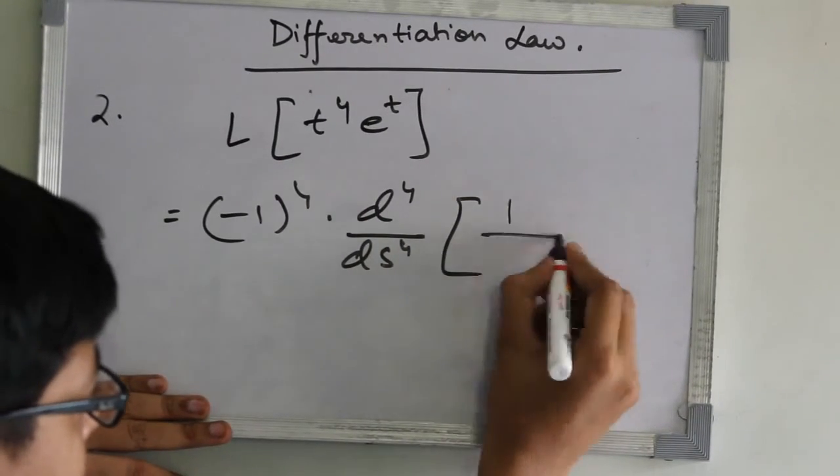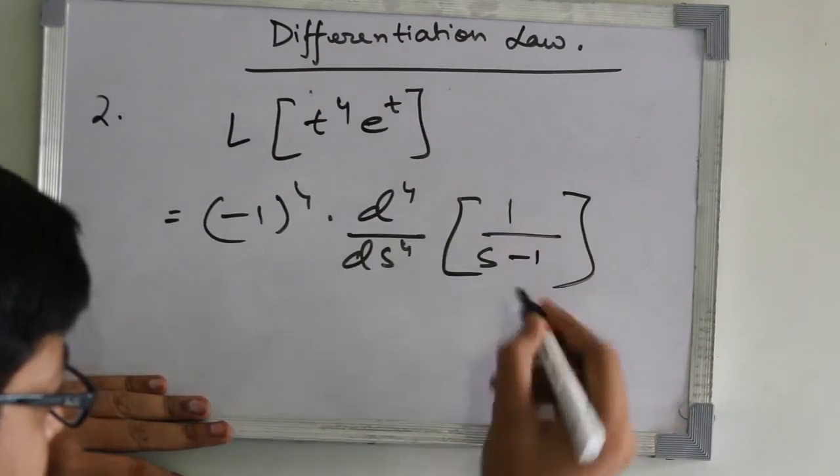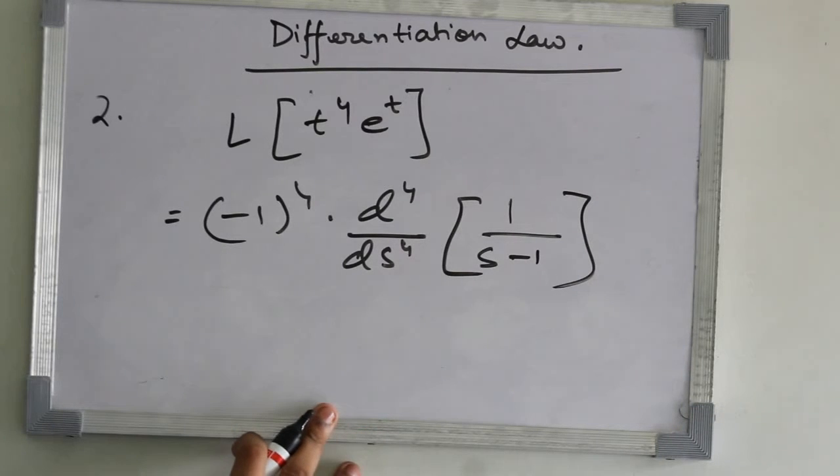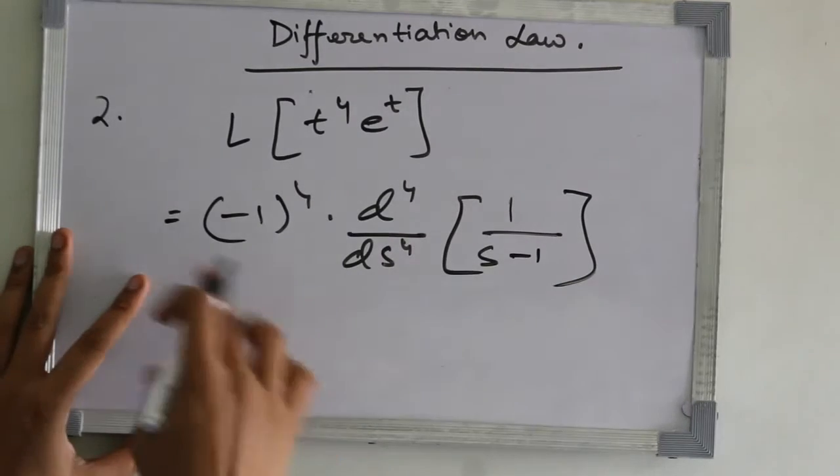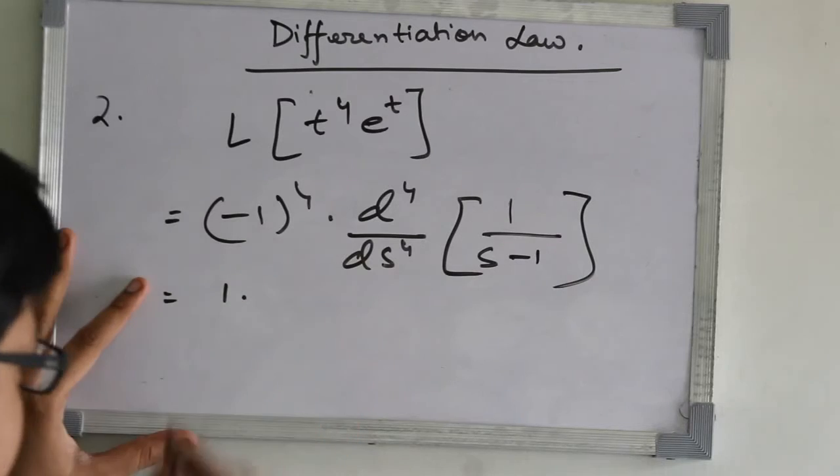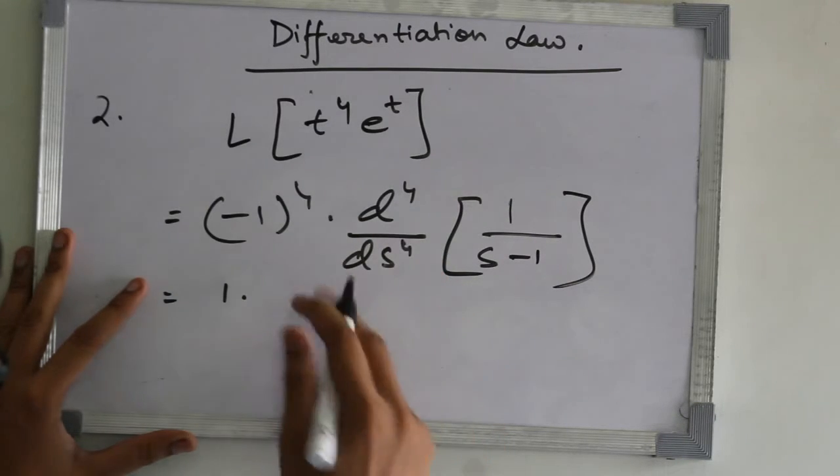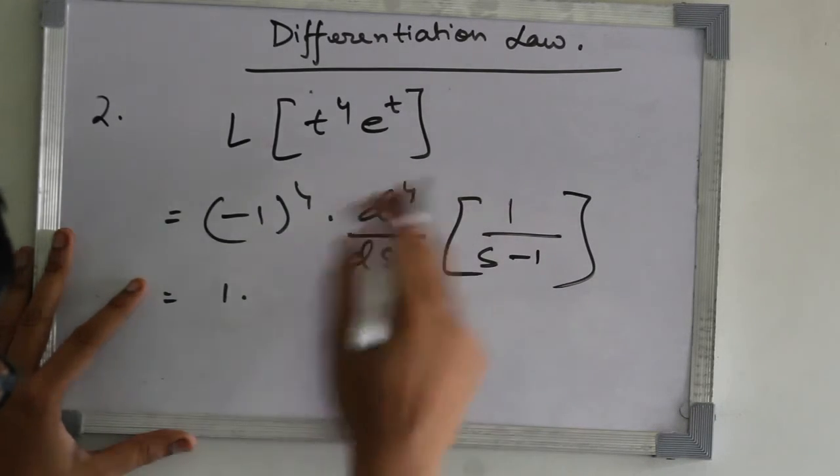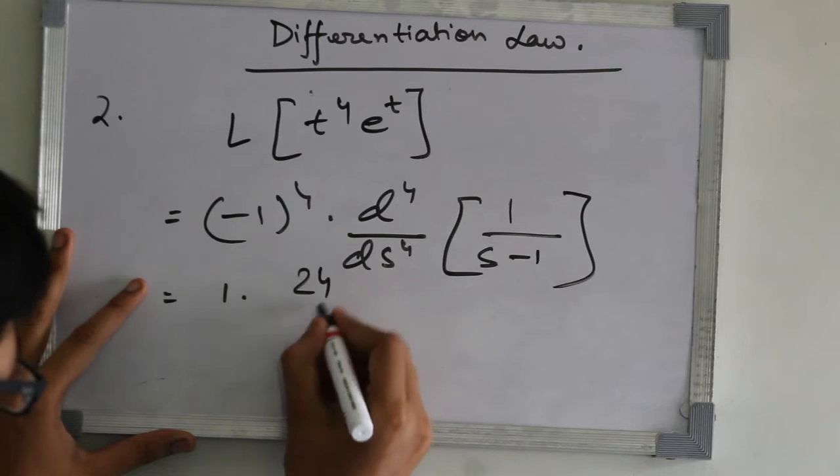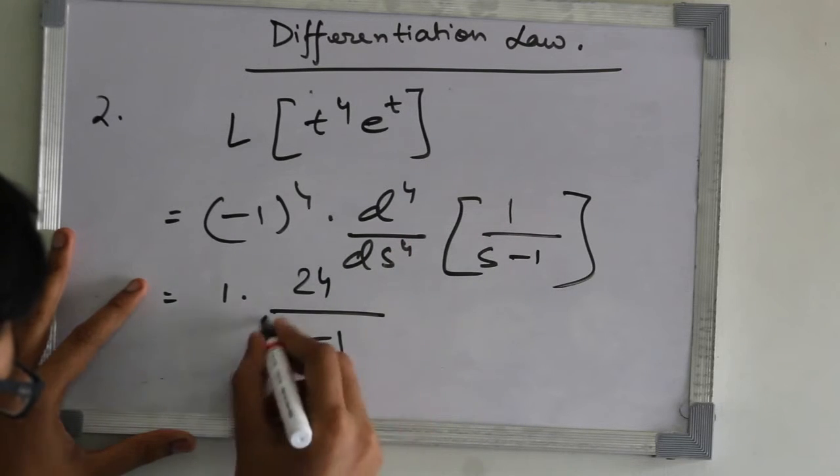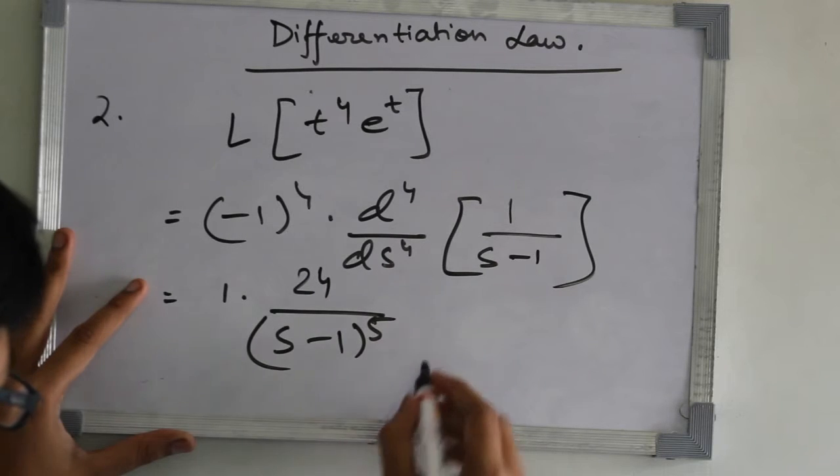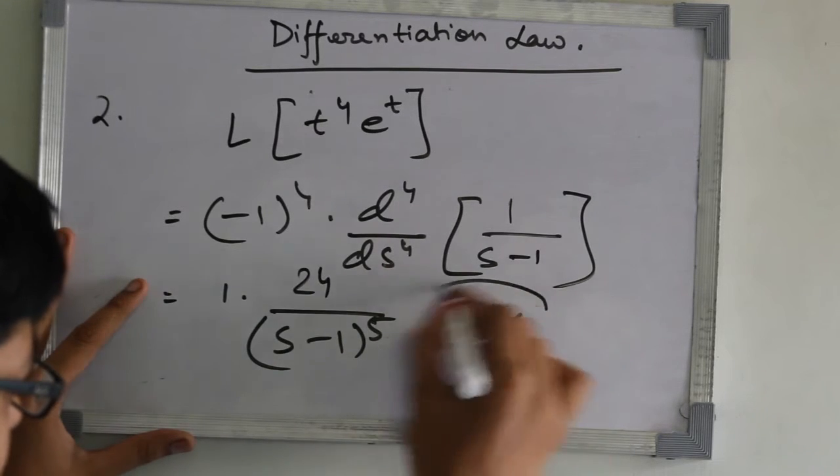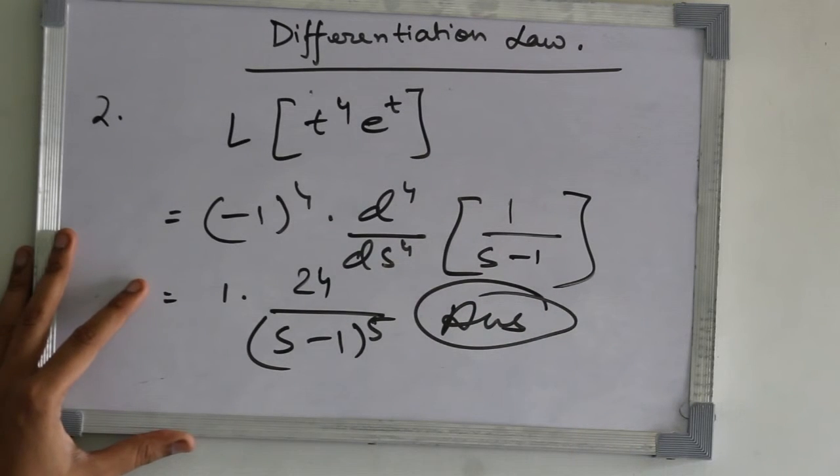Minus 1 to the power 4 equals 1, and d4 ds4 from here gives 24 upon s minus 1 to the power 5. This is the answer for this video. We'll come to you in the next video. Thank you.